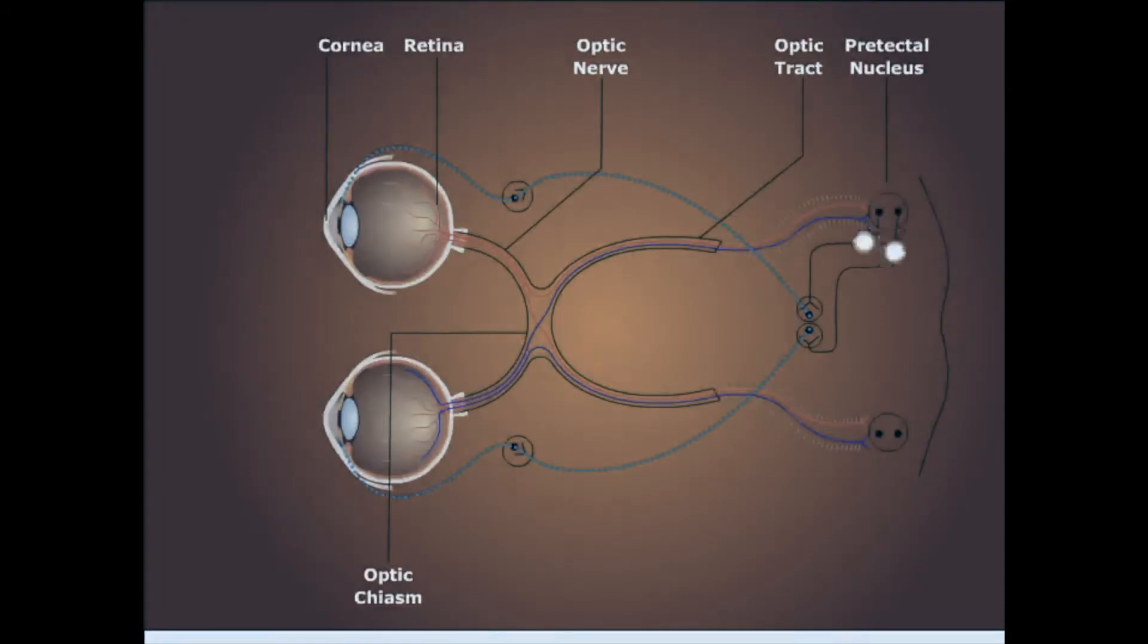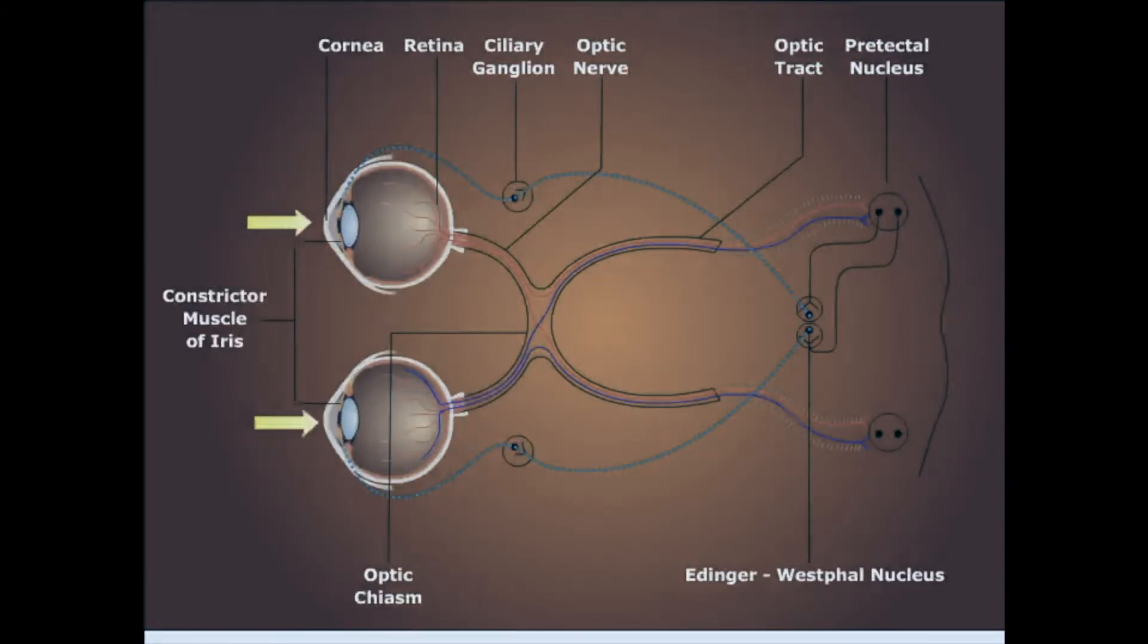After the synapse in the pretectal area, these fibers are sent to both the left and right Edinger-Westphal nuclei. These are the parasympathetic nuclei of the oculomotor nerve, which is the efferent limb of the pupillary reflex. From these nuclei, preganglionic parasympathetic fibers project within the third cranial nerve and synapse in the ciliary ganglion. Postganglionic neurons from the ciliary ganglion then reach the pupillary sphincter of the iris to cause constriction of the pupil in both eyes.